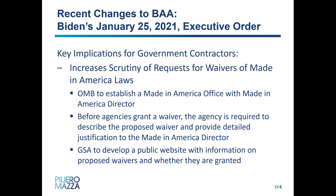The executive order also increases scrutiny of requests for waivers of made-in-America laws. It recommends that the OMB establish a made-in-America office with a made-in-America director. Before agencies can grant a waiver, they are required to describe the proposed waiver and provide detailed justification to the made-in-America director, justifying why they're making use of goods, products, or materials not mined, produced, or manufactured in the U.S. GSA is also to develop a public website with information on any proposed waivers and whether or not they're granted — an effort to increase transparency in federal procurement, though it will also bring potential public scrutiny.